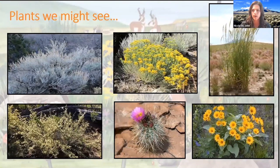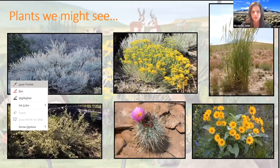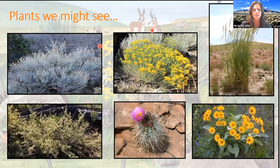As a quick overview, we've got sagebrush — definitely a big one you're going to see here in the sagebrush steppe given its name. We've got rabbit brush, we've got perennial grasses, this down here is antelope bitter brush, some different cacti species, and lots of wildflower species as well.